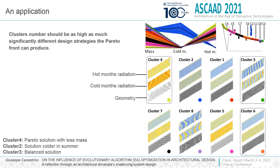Considering EA as a starting point for design exploration, a K-Means algorithm was used to generate a cluster of the Pareto front. The number of clusters shall be as high as the number of significantly different design strategies the Pareto front can produce. The progressive shrink of the explorable design space, done without technical tools, permits a more scientific decision making process truly based on measurable aspects of architecture. Pareto solutions that use significantly less mass, like in cluster 4, or balanced solutions, like in cluster 6, can now be chosen.